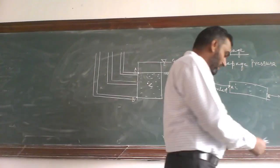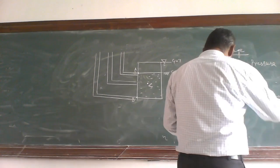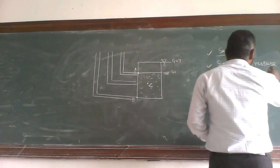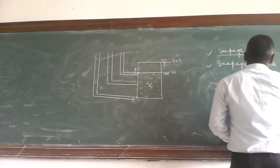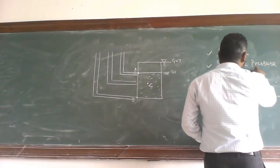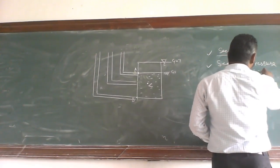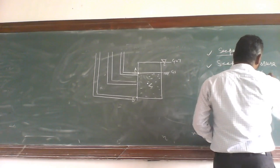The value of the seepage pressure is equal to H into gamma W.